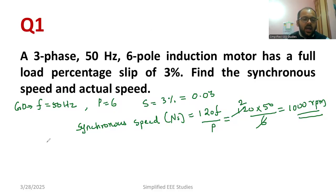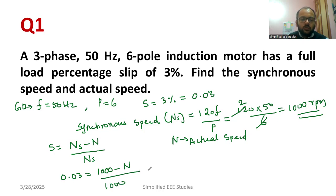Next you need to calculate the actual speed. We have the slip formula: S = (Ns - N)/Ns, where N is the actual speed of rotor. So 0.03 = (1000 - N)/1000. Using cross multiplication, 0.03*1000 = 1000 - N.